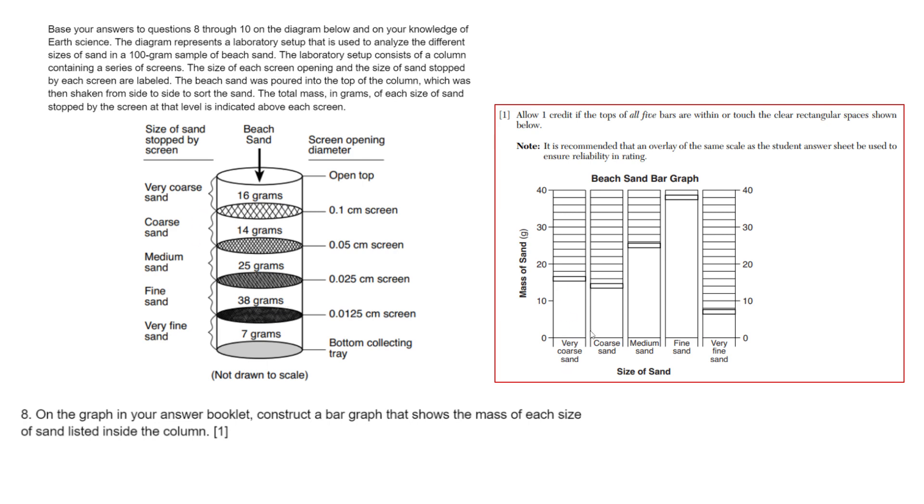For very coarse sand, I have 16 grams, so I'm going to shade and create a bar of 16. Each line is two grams: 20, 22, 24, 26, 28, 30, and so on. Coarse sand is 14 grams, so I'm going to shade up to 14. Medium sand is 25 grams, so I'll shade up to 25. Fine sand is 38, so I'll shade up to 38. And finally, very fine sand is 7 grams, so I'll shade up to 7. My bar graph should look something like this. All five bars should touch the clear rectangles on the top in the space below.